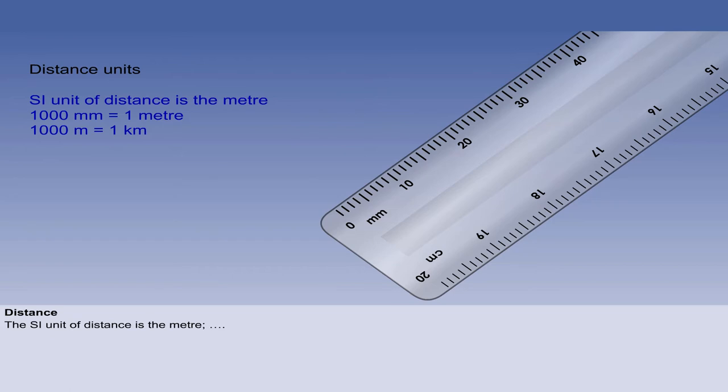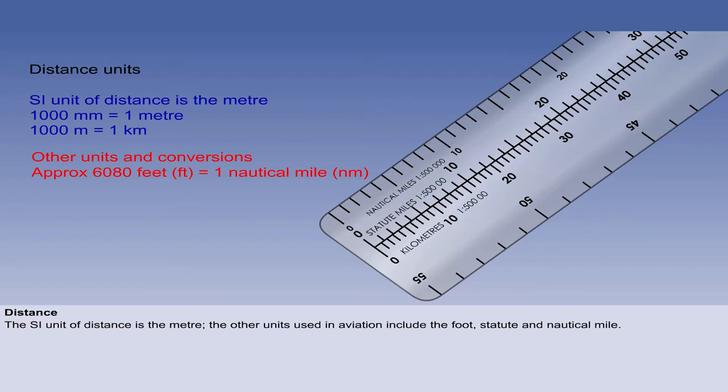We will now look at the unit of distance used in principles of flight. The SI unit for distance is the metre, designated by the letter M. But aviation mixes the metric units with the older imperial units of the foot, statute mile and the nautical mile.